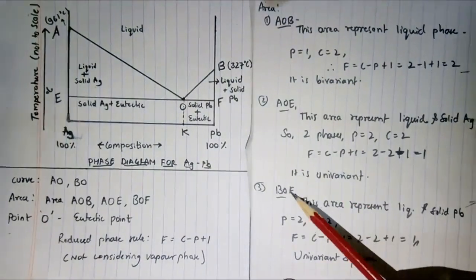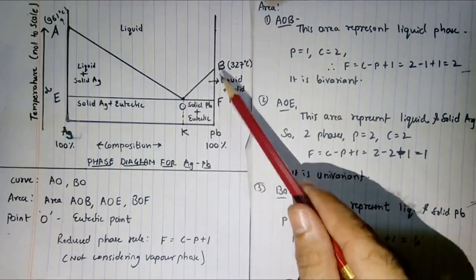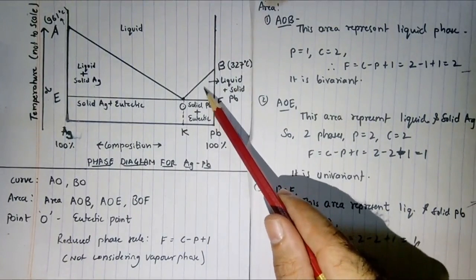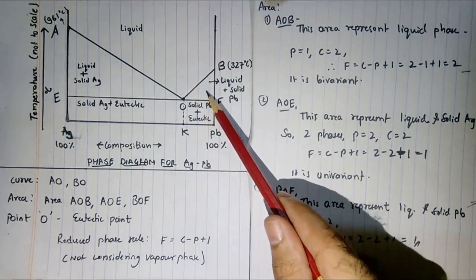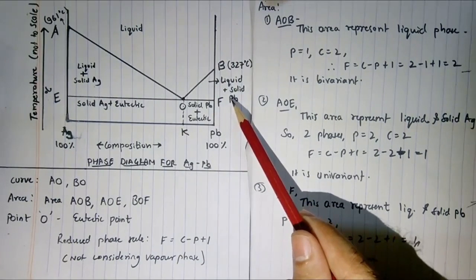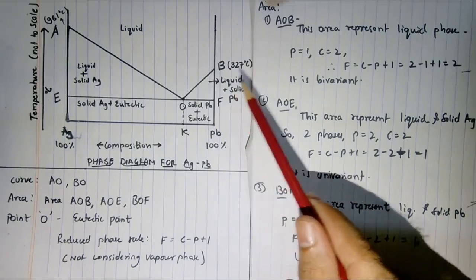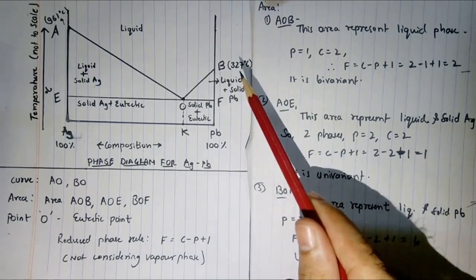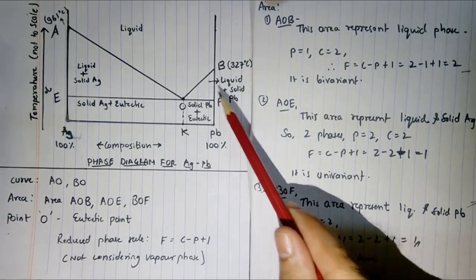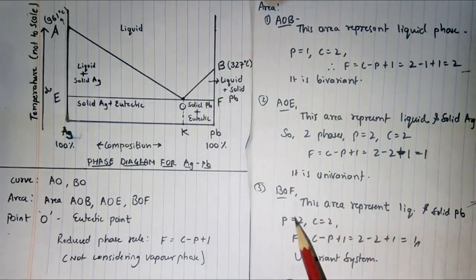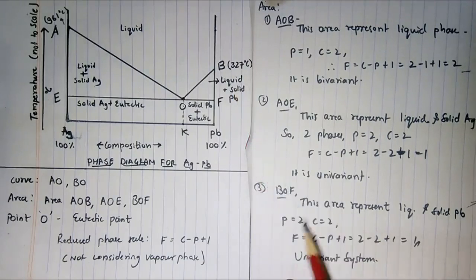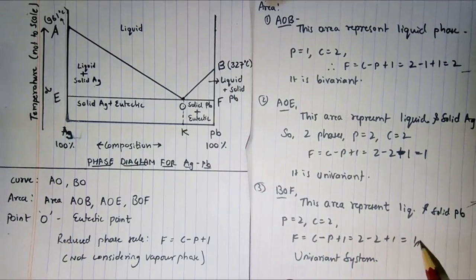Similarly, in area BOF, you have liquid mixture of silver and lead, plus solid lead. Again p = 2 (solid lead and one liquid mixture) and c = 2. Applying f = c − p + 1 = 2 − 2 + 1 = 1. So it is again a univariant system.